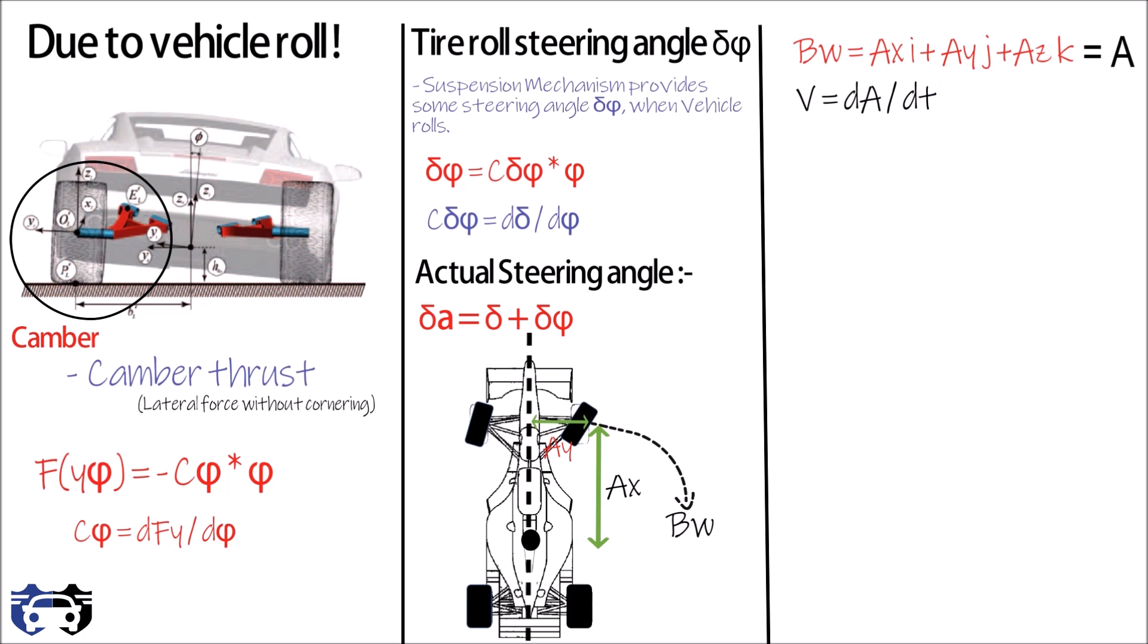We know V equals delta A by delta T plus omega cross A, which gives us velocity V equals VX i-cap plus VY j-cap plus VZ k-cap plus omega cross A.